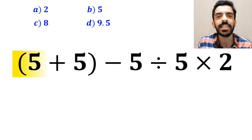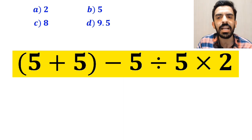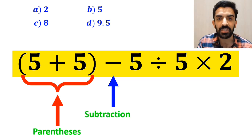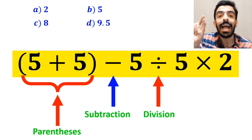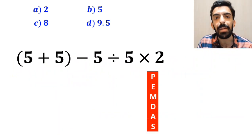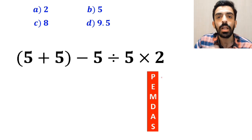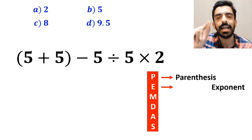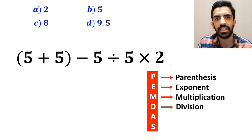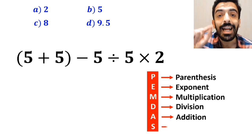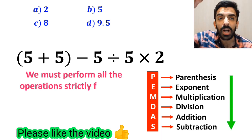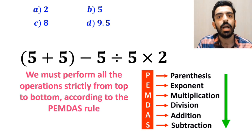Now let's solve this question step by step correctly. As you can see on the screen, this expression has a parenthesis, then a subtraction sign, followed by a division, and finally a multiplication. To solve this question, we need to follow the PEMDAS rule step by step. In this rule: P stands for parenthesis, E stands for exponent, M stands for multiplication, D stands for division, A stands for addition, and S stands for subtraction. We must perform all operations strictly from top to bottom according to the PEMDAS rule.